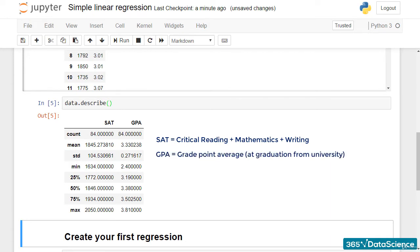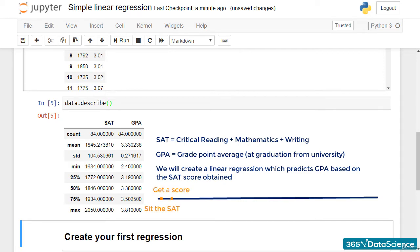That's a very famous relationship. We will create a linear regression which predicts the GPA of a student based on their SAT score. That's quite logical, right? You sit the SAT and get a score. With this score, you apply to college.